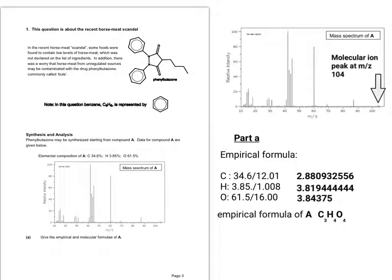So that means that our empirical formula must be C3H4O4. But looking at the mass spectrum a bit more closely, the molecular ion peak at Mz equals 104 is also equal to C3H4O4. It must mean the molecular formula is also C3H4O4.